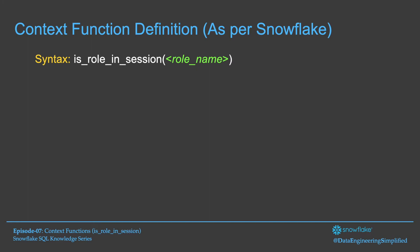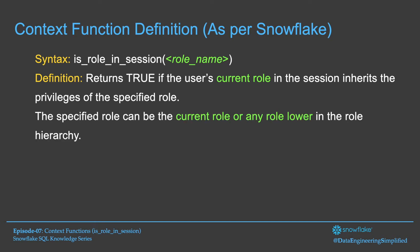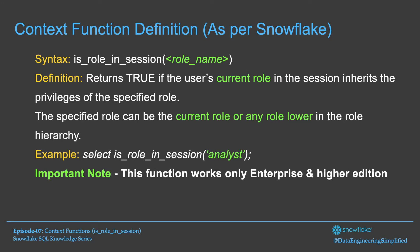Let's talk about the definition of this context function as per Snowflake. The syntax looks like this: isRoleInSession, and it takes a role name as a parameter. The definition says: returns true if the user's current role in the session inherits the privileges of the specified role. The specified role can be the current role or any role lower in the role hierarchy. For example, SELECT is_role_in_session('analyst') — if the analyst role is the current role or lower in the role hierarchy, it returns true; otherwise it returns false. One important note: this function works only on Enterprise and higher editions of Snowflake. It does not work with the Standard edition.